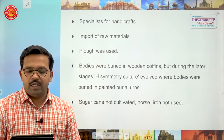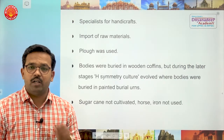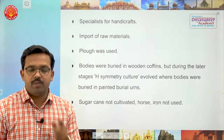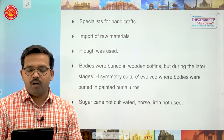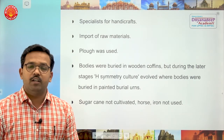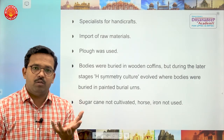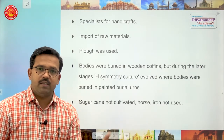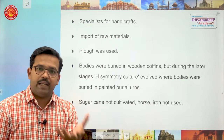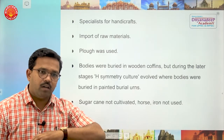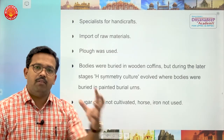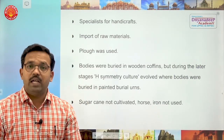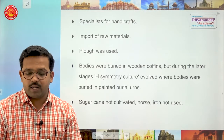During later stages of Harappan Civilization, H-Cemetery culture was there. In H-Cemetery culture, bodies were buried in painted burial urns. Urns are large containers made of clay, and the urn covers had portrayals of queens, kings, or demons. Sugarcane was not cultivated — this question has been asked. Horse and iron were not used. Remember: sugarcane was not present.